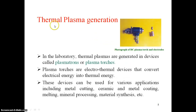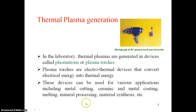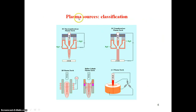The device used for generation of plasma is the plasma torch. The figure shows the plasma torch, which is an anode-cathode arrangement — on supply of voltage and current it generates plasma. Plasma torches are also known as plasma transducers, used for laboratory generation of plasma, and can be used for metal cutting, ceramic and metal coating, mineral processing, and material synthesis.